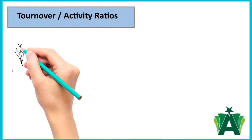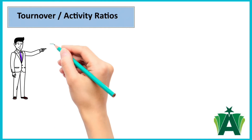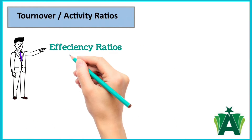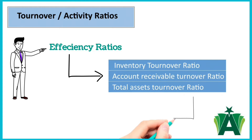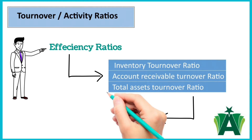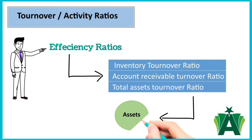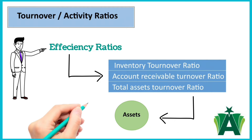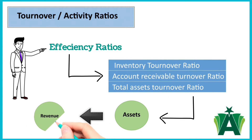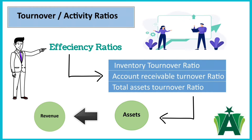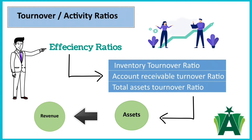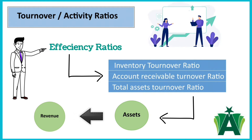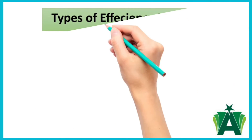Turnover or activity ratios are also known as efficiency ratios. These are a group of financial metrics used to measure the efficiency with which a company uses its assets to generate revenue. They provide insights into a company's operational efficiency and its ability to manage its assets and liabilities effectively. There are several different types of efficiency ratios.